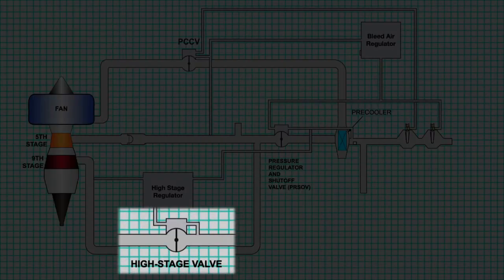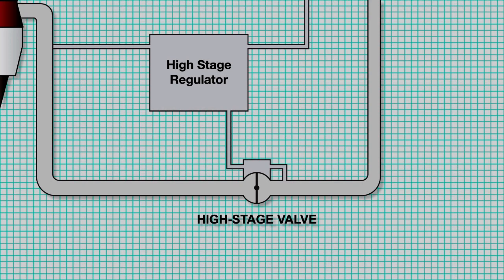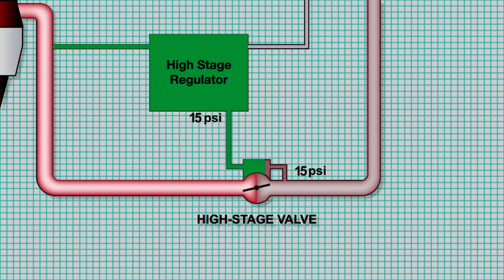Now that we've seen that the HSV, PRSOV, and the PCCV control air flow through the system, let's take a closer look at how each of these valves is controlled. When the engine starts, the HSV is closed. As pressure reaches 10 PSI, the HSV is fully open. The HSR regulates the HSV control pressure to 16 PSI. When the downstream pressure is more than 32 PSI, it overcomes the 16 PSI control pressure, causing the HSV to move toward the closed position. This balance of forces regulates the 9th stage pressure in the system to 32 PSI.